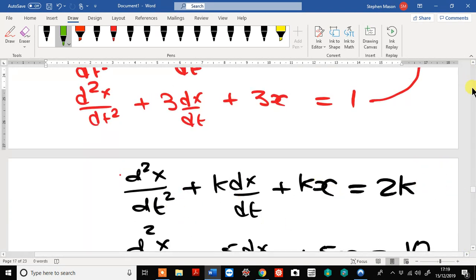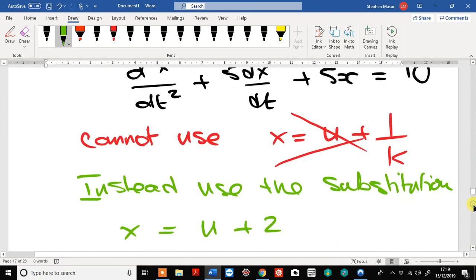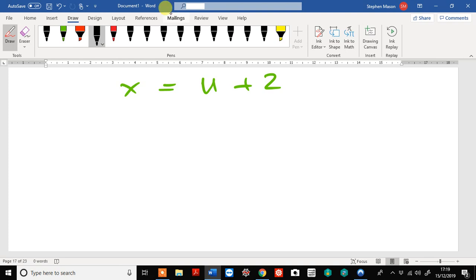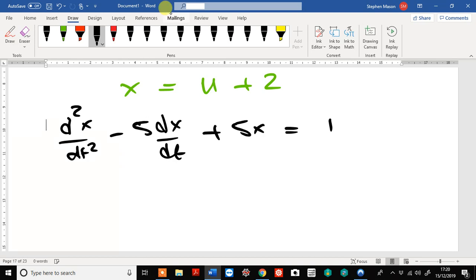So, for our particular equation, I'm going to write it down again, we've got d squared x by dt squared minus 5dx by dt plus 5x equals 10.